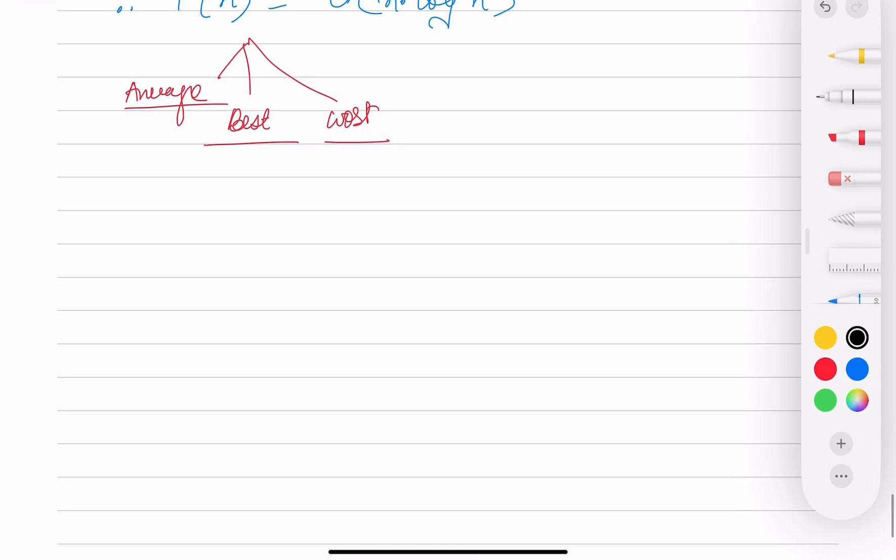Now if I talk about space complexity. If you remember, when we do merge, what we do is we have a temporary array B[k]. We store that in B[k], and we have array A[l] that is our original array. We need extra space, that is O(n).